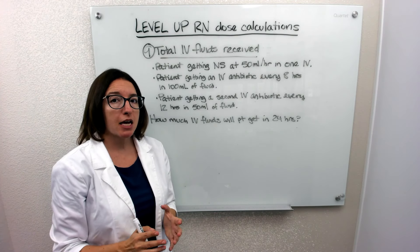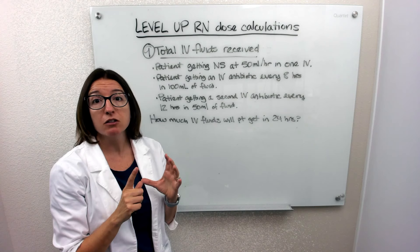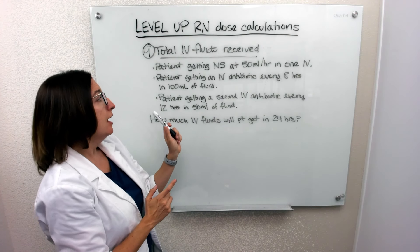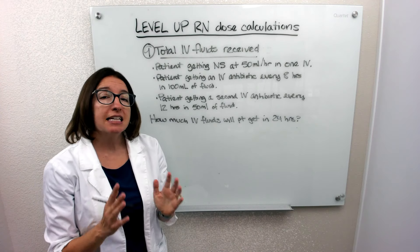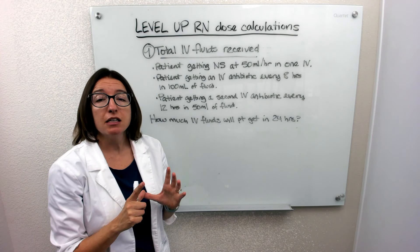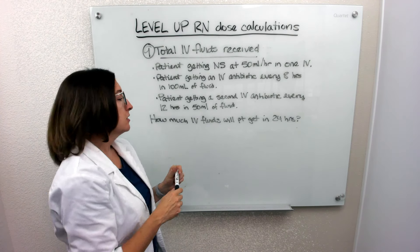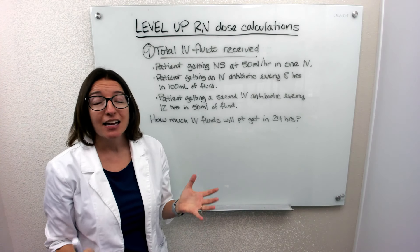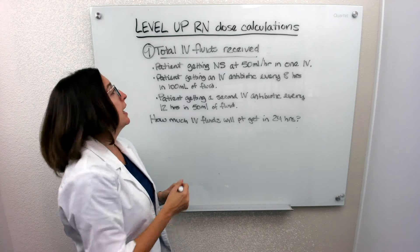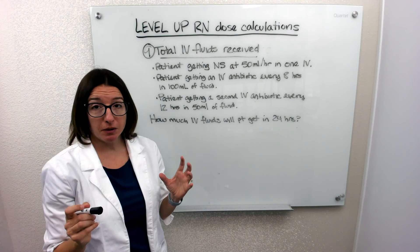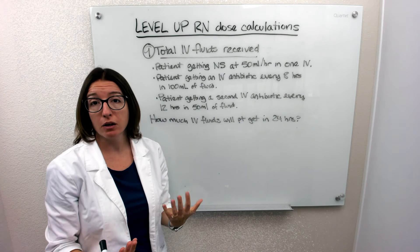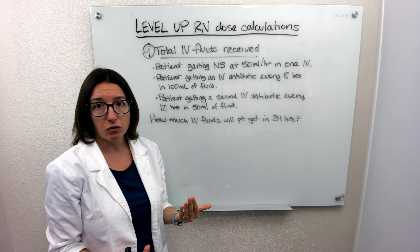And this particular antibiotic is in 100 milliliters of fluid. And then they're getting a second IV antibiotic every 12 hours. And this antibiotic is in 50 milliliters of fluid. And so the problem asks, how much IV fluids will the patient get in 24 hours? So we're going to handle each of these separately to figure out how much they're getting of each of these within a 24-hour period of time and then add those together.